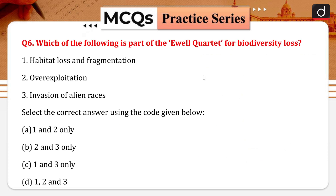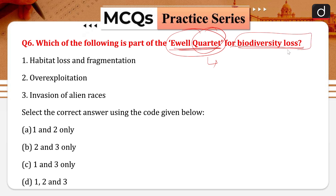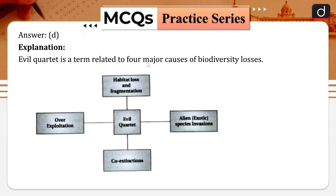Question number six: which of the following is part of the well quartet? The well quartet is a term in biodiversity dealing with biodiversity loss. It includes four factors: habitat loss and fragmentation, over-exploitation, alien invasion of alien species, and co-extinction. All three given options — habitat loss and fragmentation, over-exploitation, and alien invasion — are factors leading to biodiversity loss, so option D is the right answer.